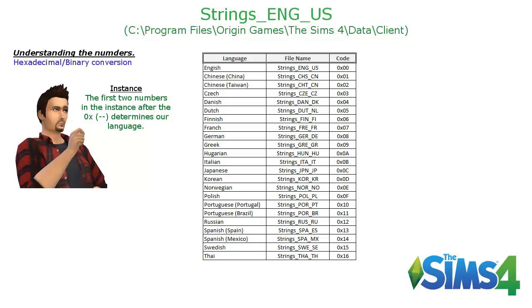Here's a list of all the different languages and the text code that goes with those languages: 00 being English, 01 being Chinese, 07 being French. By changing the first two digits after the 0x, you tell the game what language that file is. Since I downloaded my game in English, my data files will search for text files with the 00 code in the beginning, looking only for English 00 code files.